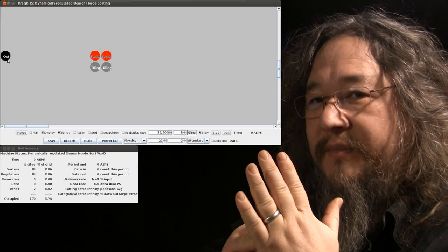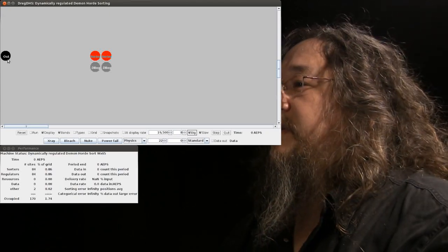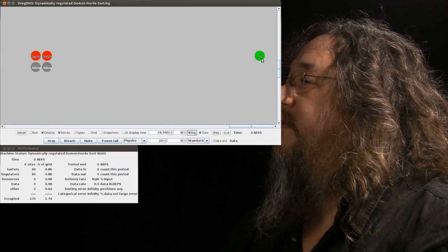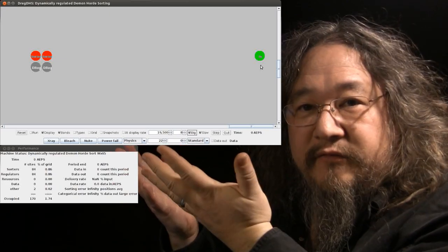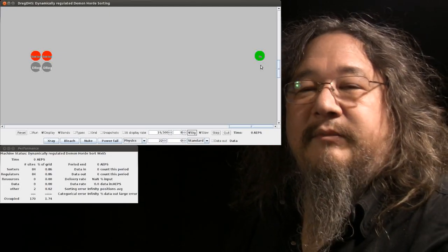It's going to say, well, I know what numbers ought to be coming here, and we'll check to see how well the sorting is going. Similarly, over at the other end, on the right, we've got an input guy. He's going to generate data, just at random for purposes of this demo, to be sorted by the demon horde sort.